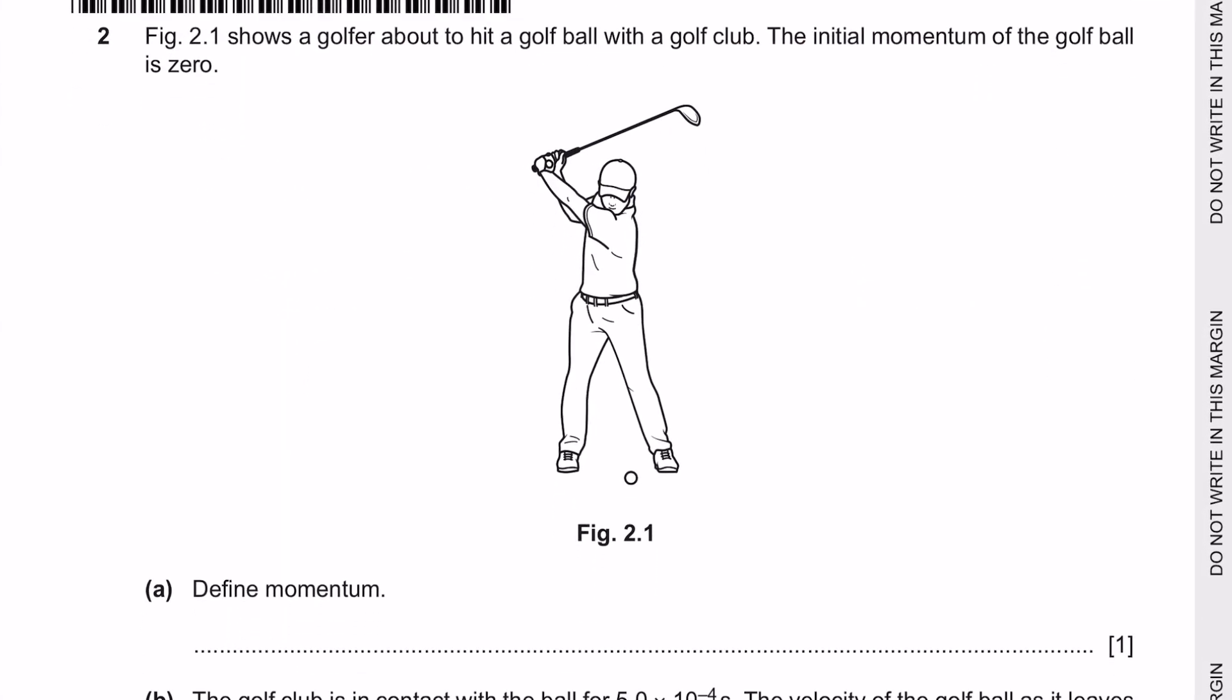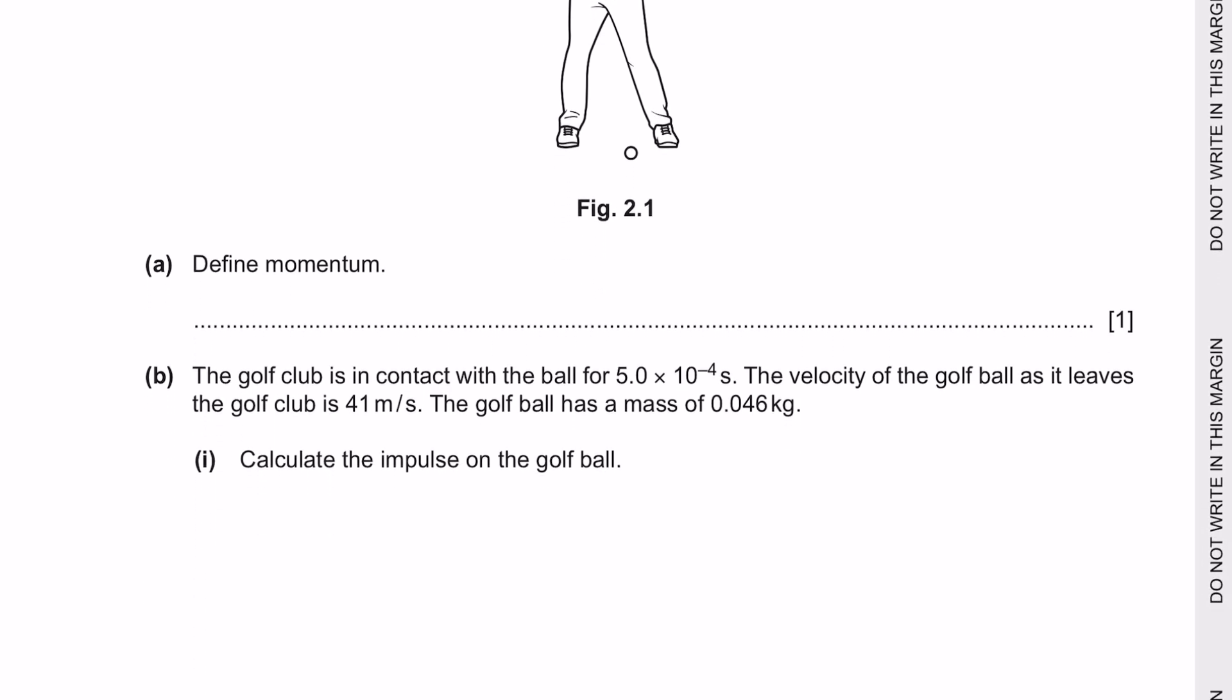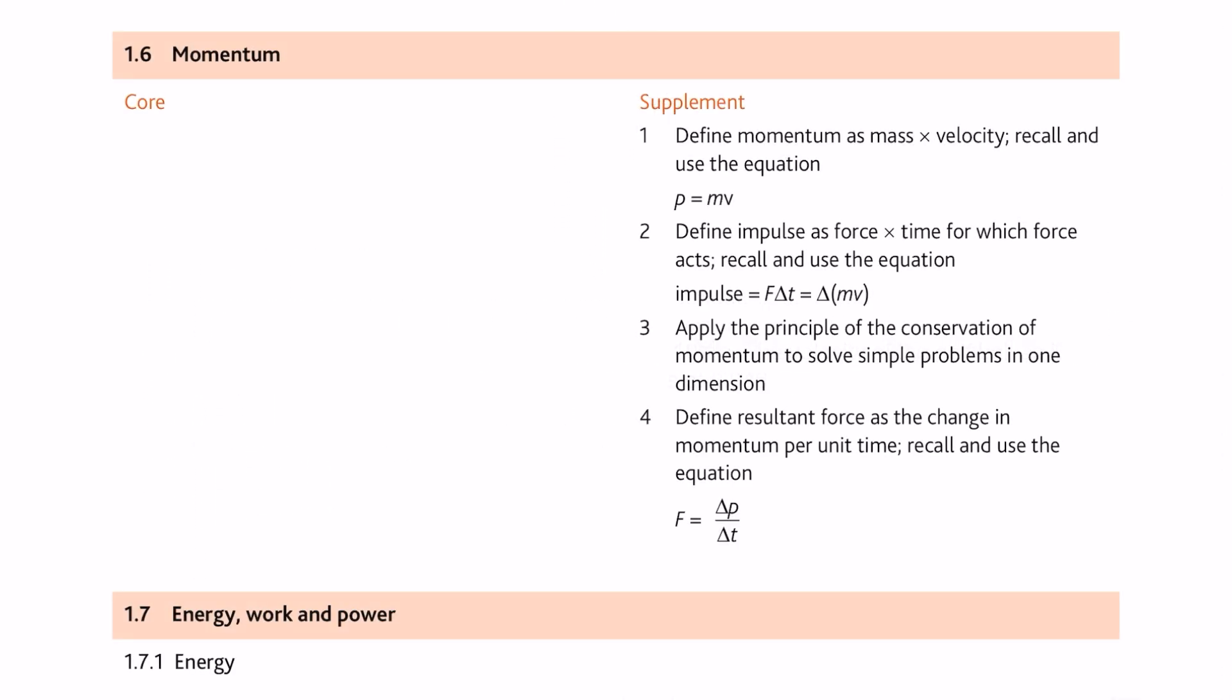Next question 2. Figure 2.1 shows a golfer about to hit a golf ball with a golf club. The initial momentum of the golf ball is 0. Question part A: Define momentum. In your syllabus, momentum has to be defined as mass times its velocity.